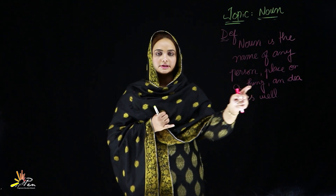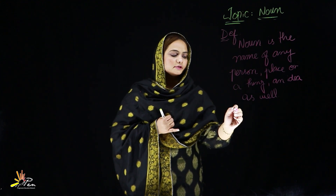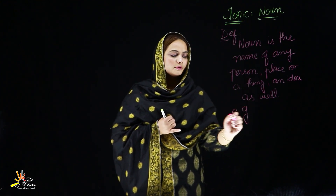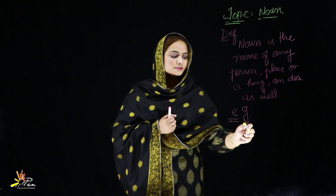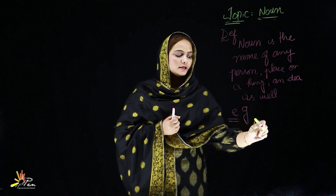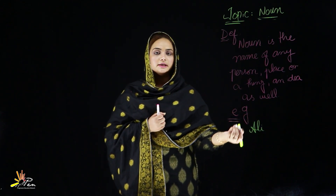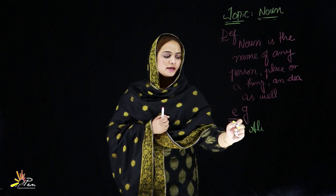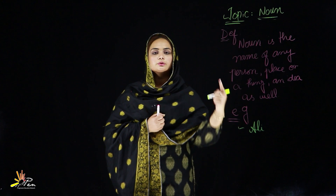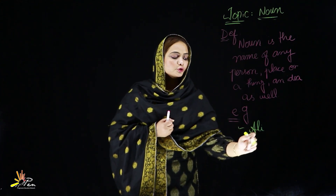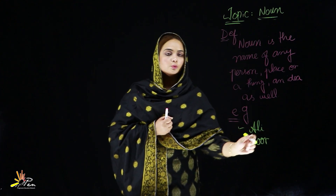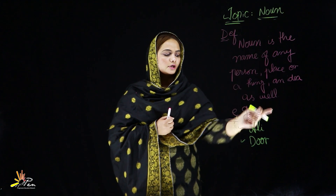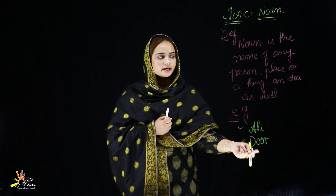And thing ka naam bhi noun ho ga. I will tell you examples. Toh noun ki examples mein kya aayega? Ali — Ali kyunke Ali naam hai person ka, kisi bhi shaks ka naam hai, so Ali will be included in noun. Then if I write 'door' — door is a thing, kisi bhi cheez ka naam noun ho ga, so door bhi noun hai.